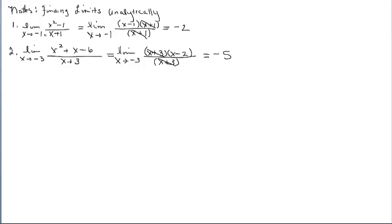If you want to convince yourself, you could graph each of these functions and use the trace feature. Plug in values close to negative 1 or close to negative 3 on either side, and those values are going to be close to these limit answers. This is called the dividing out technique.